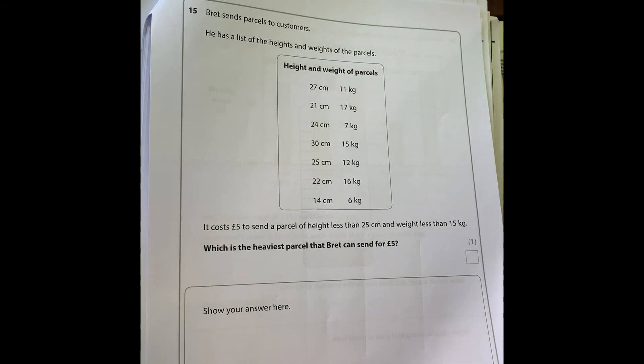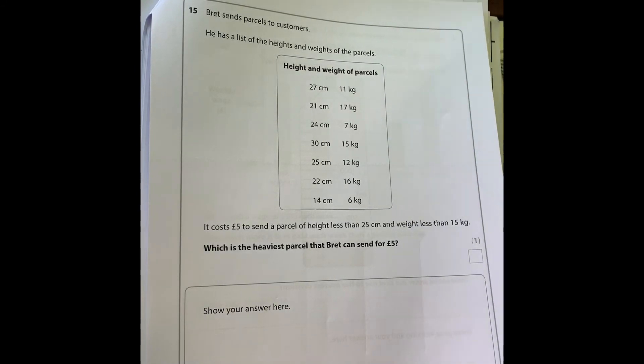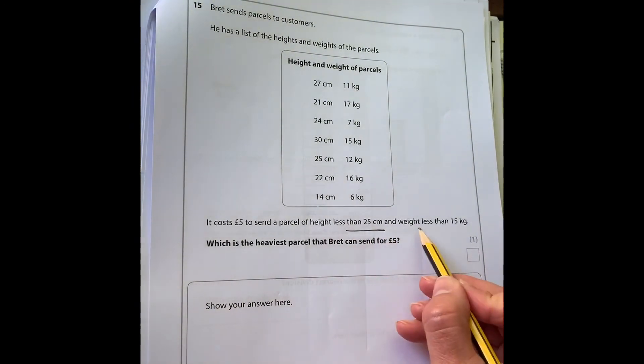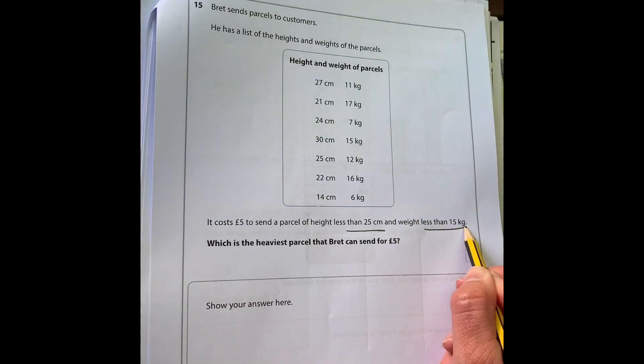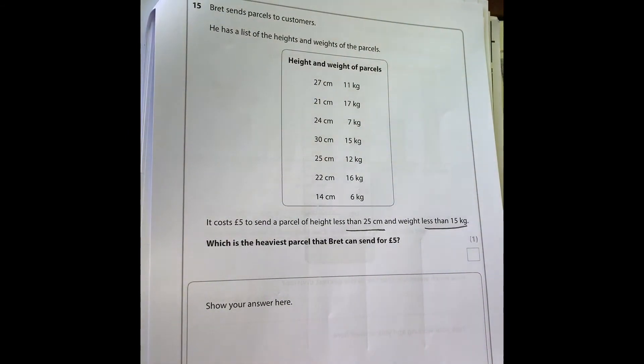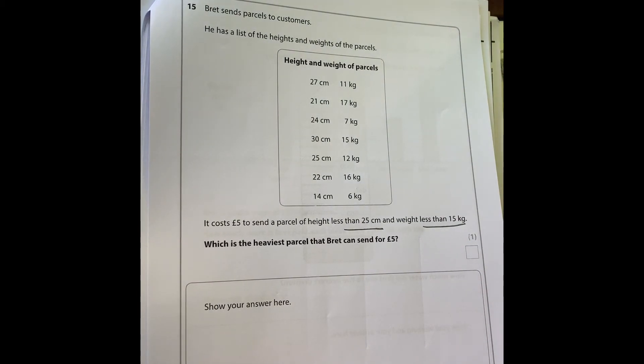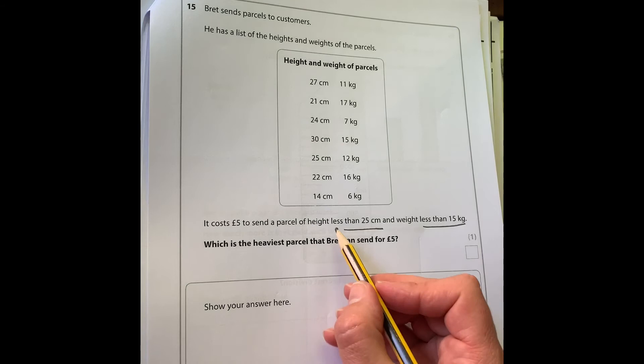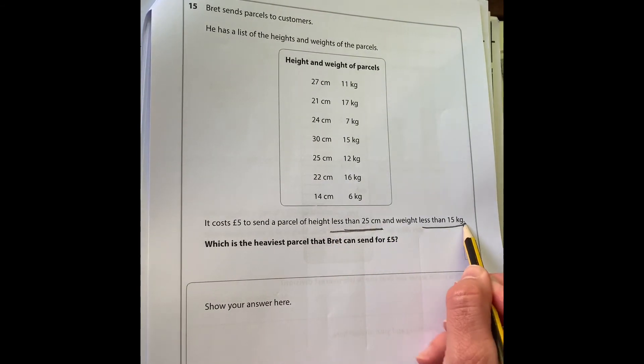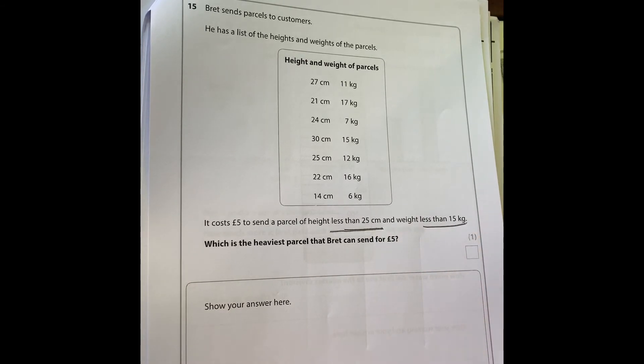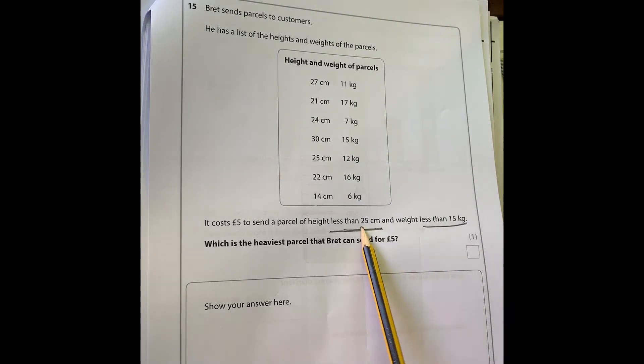Question 15: Brett sends parcels to customers. He has a list of the heights and weights of the parcels. It costs five pounds to send a parcel of height less than 25 and weight less than 15. What is the heaviest parcel that Brett can send for five pounds? The thing I notice here is that it's less than 25 and less than 15. So if it says less than, it can't actually be 25, it has to be less than.